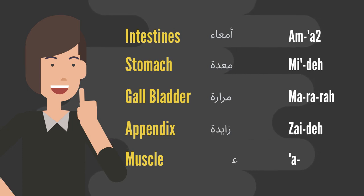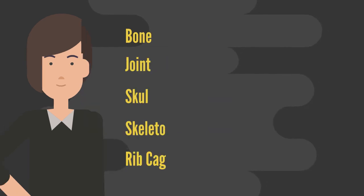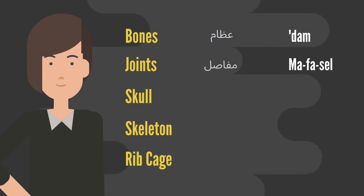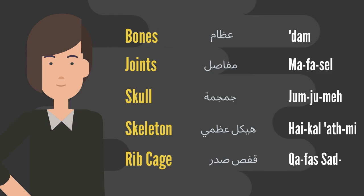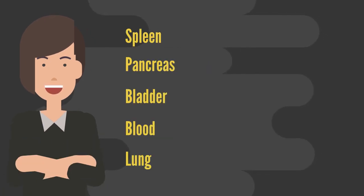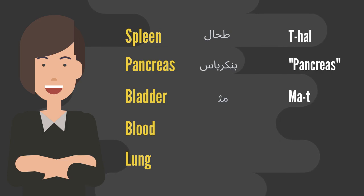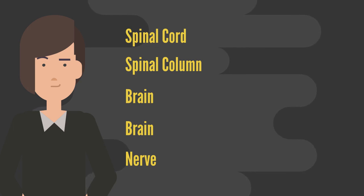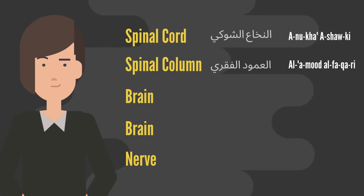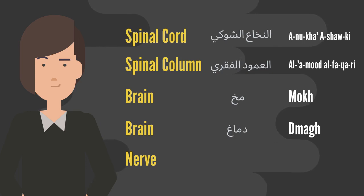Muscle: aadale. Bones: aadam. Joints: mafasal. Skull: jumjume. Skeleton: heykel aadmi. Rib cage: qafasadri. Spleen. Pancreas: pancrias. Bladder: methane. Blood: dumb. Lung: ria. Spinal cord: nukha'i shouki. Spinal column: l'amood al-faqari. Brain: mukh or dmaagh. Nerve: aasab.